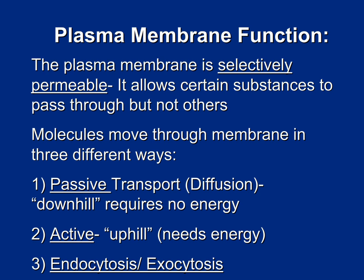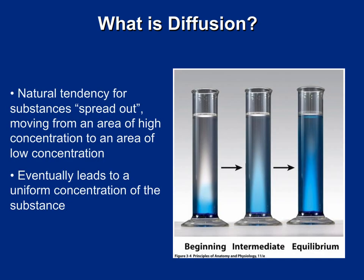Now that we've learned about the anatomy of the cell membrane, let's look at its function. The plasma membrane is a selectively permeable membrane — it allows certain substances to pass through but not others. Molecules can cross the plasma membrane in three different ways: passive transport, which is a downhill movement of molecules requiring no energy but needing a concentration gradient; active transport, which moves molecules against their concentration gradient using energy; and endocytosis/exocytosis, a special type of active transport for very large molecules.